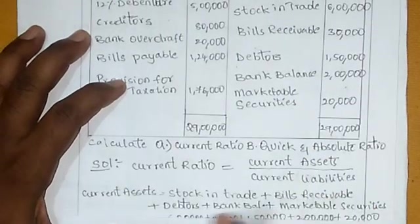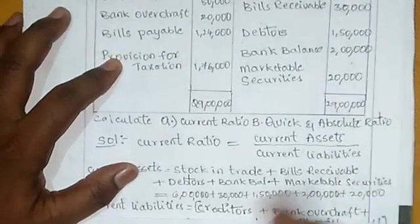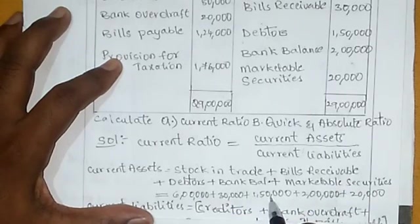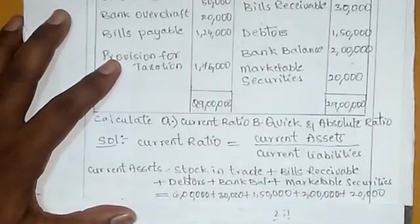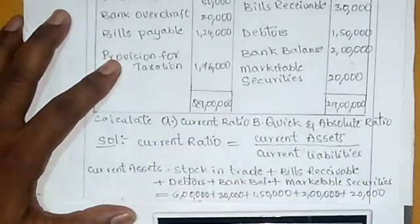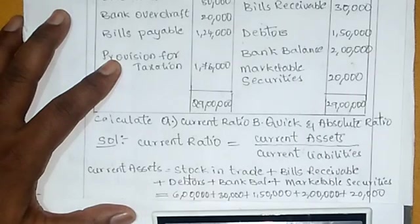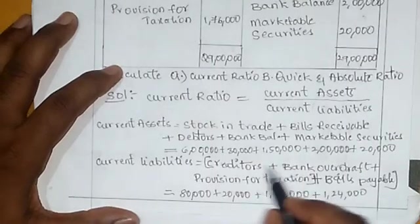Current assets = stock in trade + bills receivable + debtors + bank balance + marketable securities. That is: 6 lakhs + 30,000 + 1 lakh 50,000 + 2 lakhs + 20,000. Adding these together, total current assets = 10 lakhs.